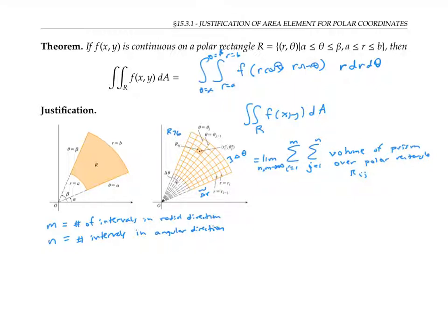So now the volume of the prism over polar rectangle r_ij is going to be the height of the prism times the area of r_ij. As usual, the height is going to be given by the function evaluated at some sample point (r_i*, θ_j*).